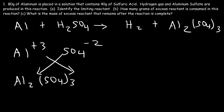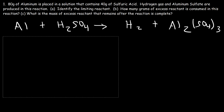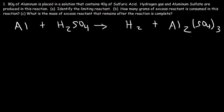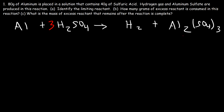Now we need to balance the chemical equation. Notice that we have three sulfate ions on the right side and one SO₄ unit on the left, so we put a 3 in front of H₂SO₄ to have three sulfate units. Now we have two aluminum atoms on the right, so we need a 2 in front of Al. We then have six hydrogen atoms on the left, so we put a 3 in front of H₂. Now the equation is balanced.